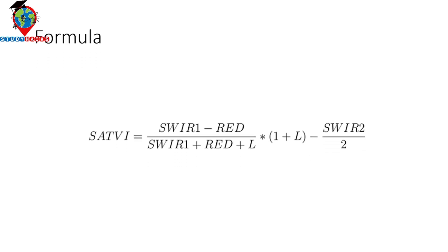This is the formula for the Soil Adjusted Total Vegetation Index. It is: (SWIR1 minus Red) divided by (SWIR1 plus Red plus L), multiplied by (1 plus L), then subtract (SWIR2 divided by 2). This is the formula we can use to easily calculate the Soil Adjusted Total Vegetation Index and create the map.